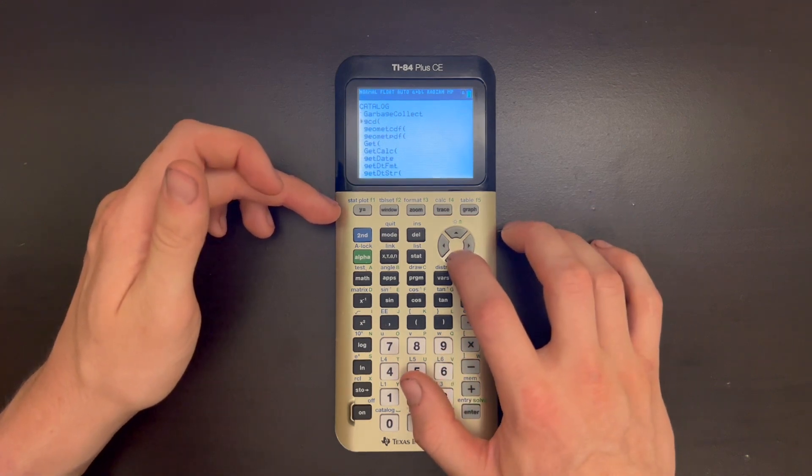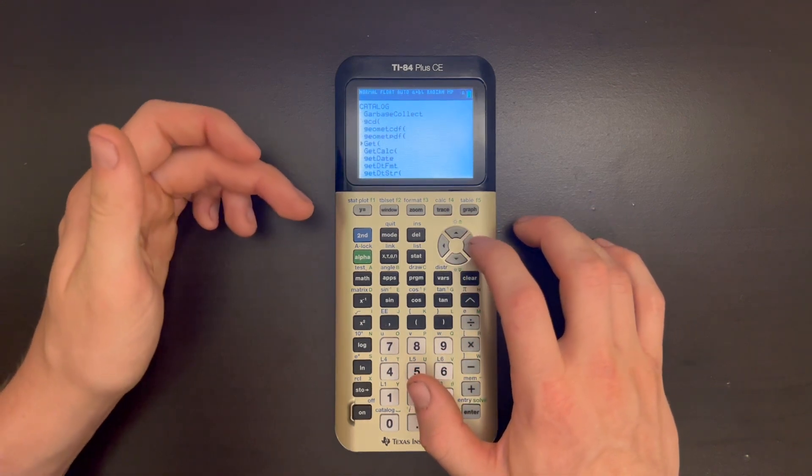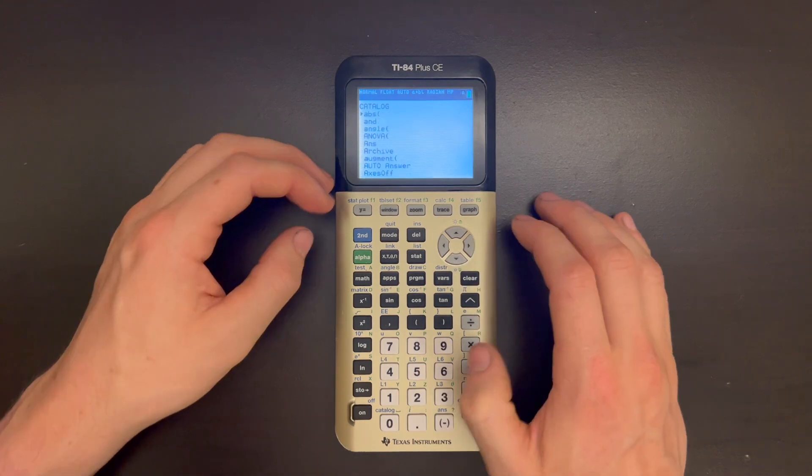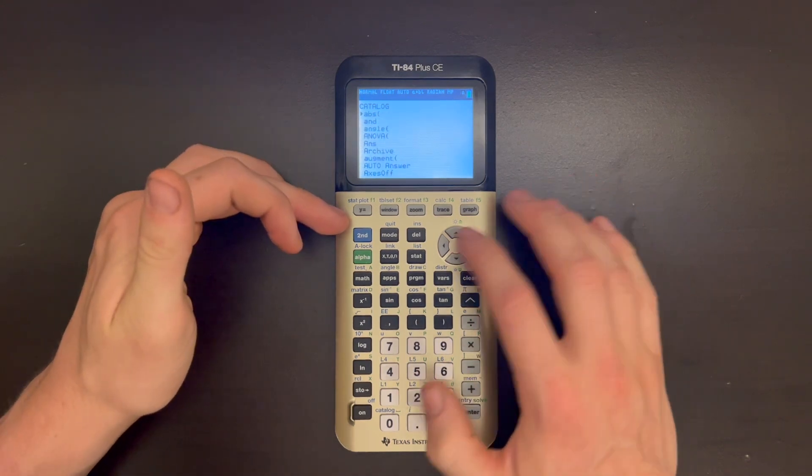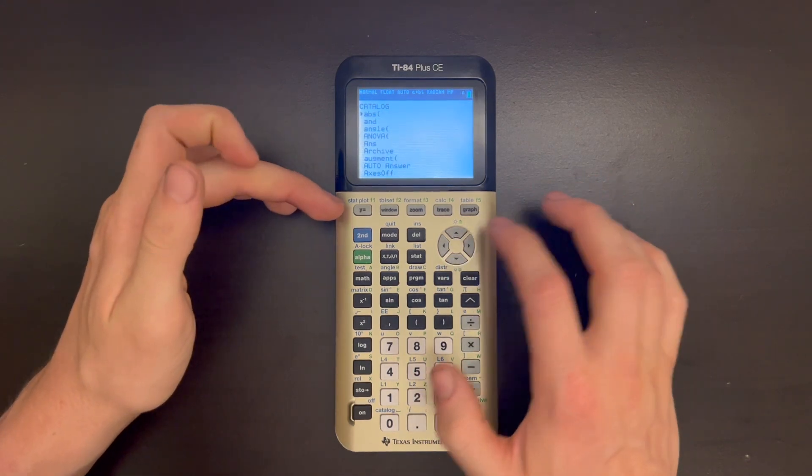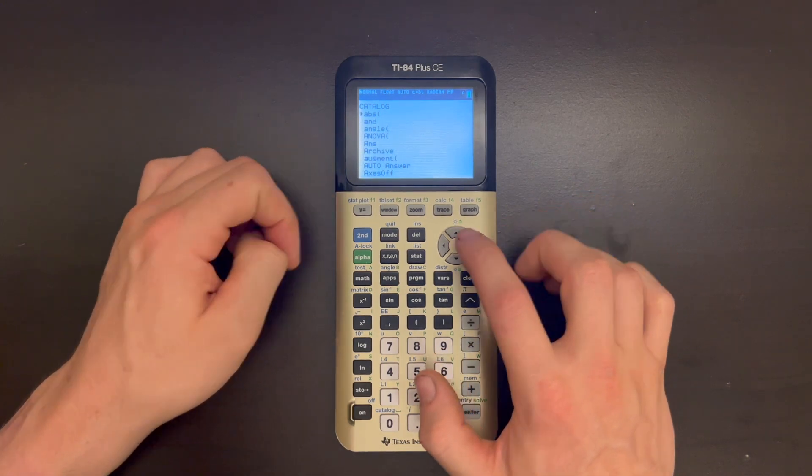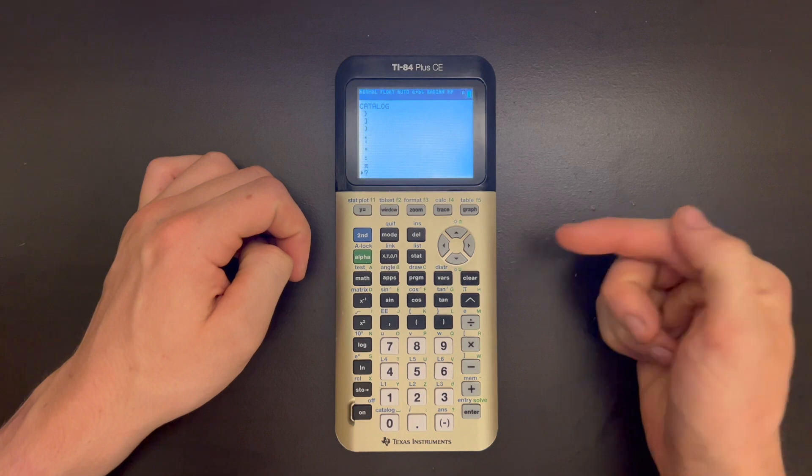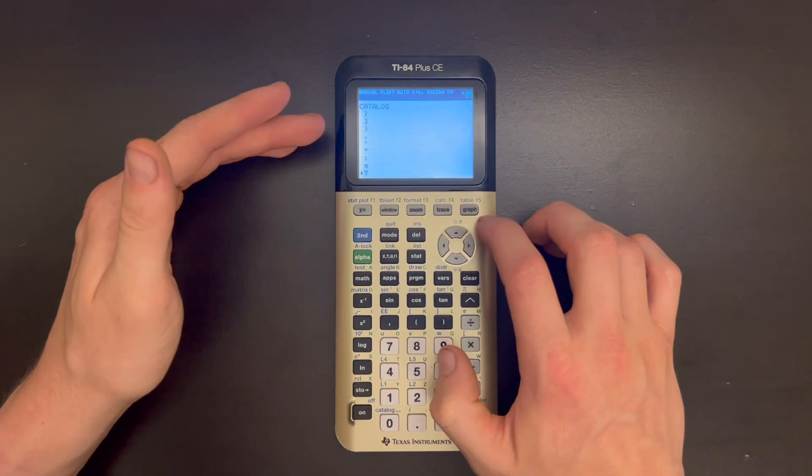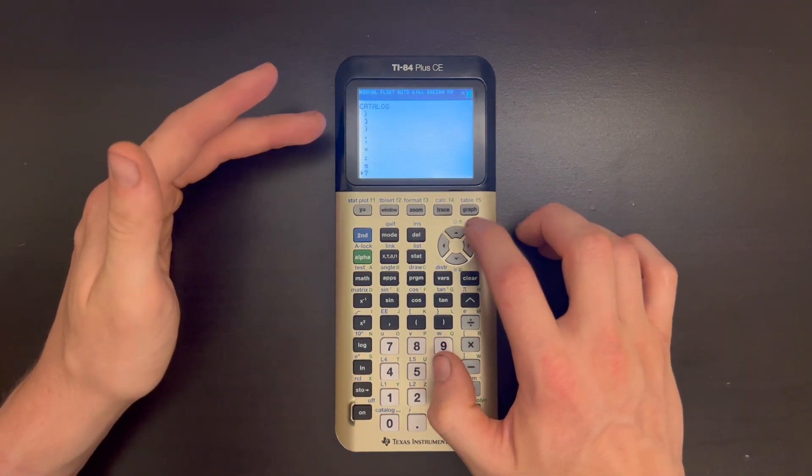And then from there you can use the arrow keys to select exactly what function you want. And if you want some sort of special character, those are in this list. And the fastest way to get to it is just to start from the top at A, and then just press up on the directional pad, which will take you to the bottom of the list. And this is where all the special characters are for your calculator.